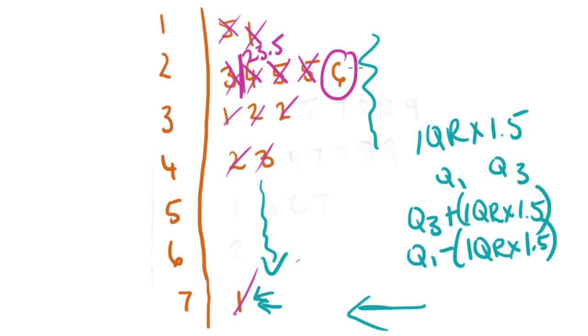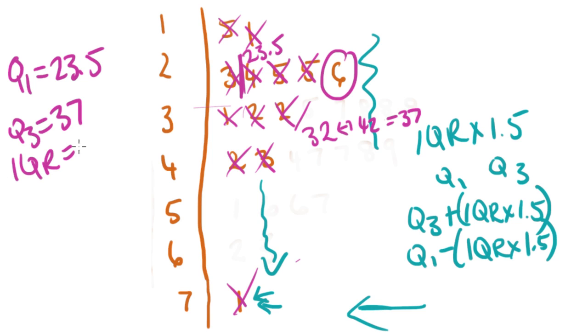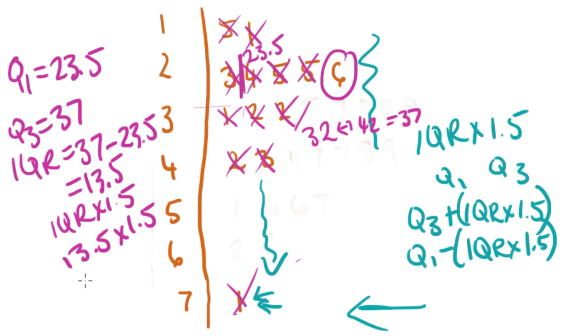And I'll do it on this side, to the other side of the 6. 1 from the bottom, 1 from the top. 1 from the bottom, 1 from the top. 1 from the bottom, 1 from the top. So I've got 32 and 42 being the numbers. So halfway between 32 and 42 is 37. And if you don't know, just add them together and divide by 2. That helps you find halfway between 2 points. So I've got a Q1 of 23.5 and a Q3 of 37. My IQR is going to be 37 minus 23.5, which is 13.5. Now I want to know the IQR times 1.5. So 13.5 times 1.5 equals 20.25.